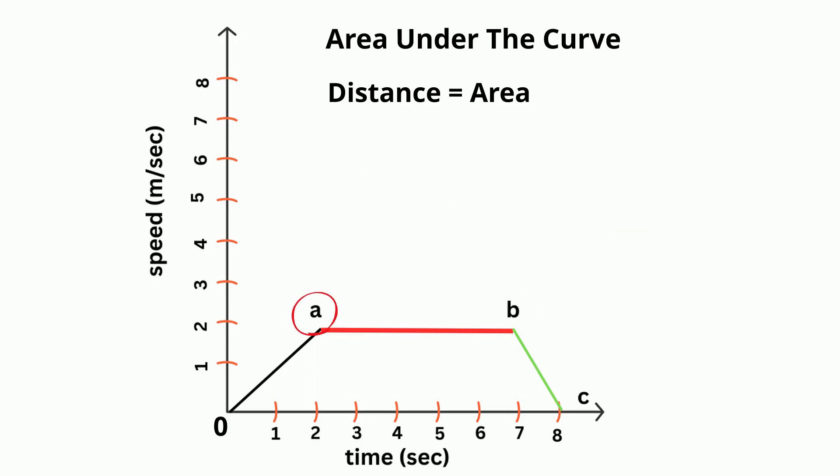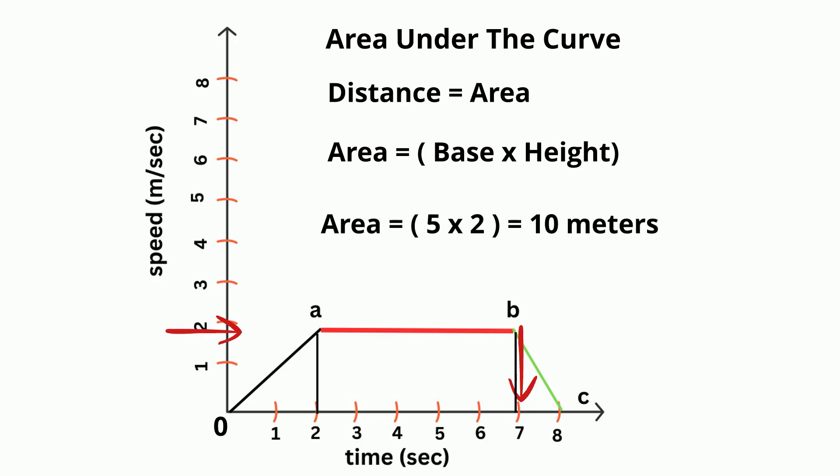How about from a to b? Remember, we don't have acceleration, so we can use the same thing. We're going to find the area, but it's the area of a rectangle and it's going to be the base times the height. The base is five, the height is two, so it would travel 10 meters.